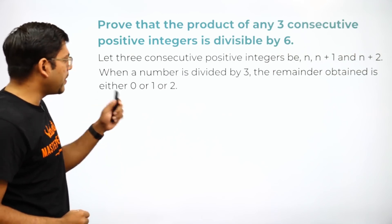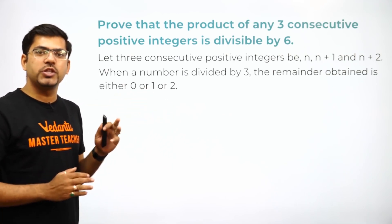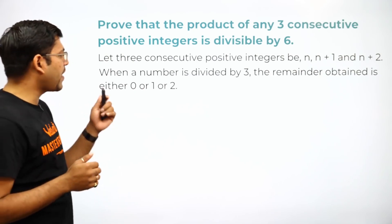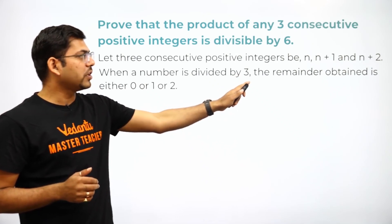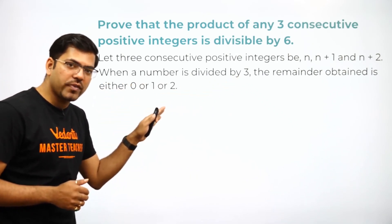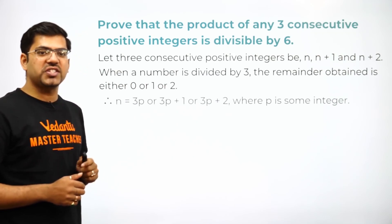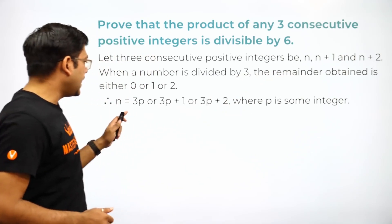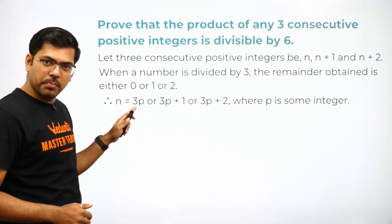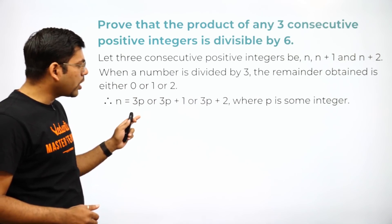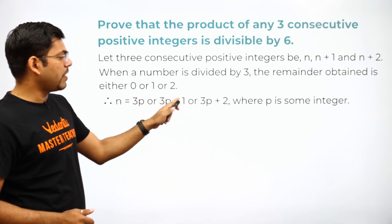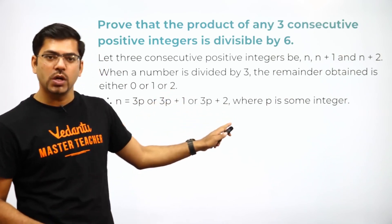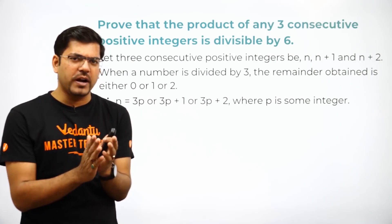When a number is divided by three, the remainder can be zero, one, or two. By Euclid's theorem, the remainder can never be more than the divisor. So if I am dividing any number by three, the remainder will always be either zero, one, or two. Therefore n can be of the form 3p, 3p+1, or 3p+2.